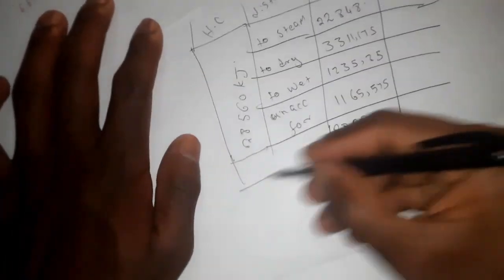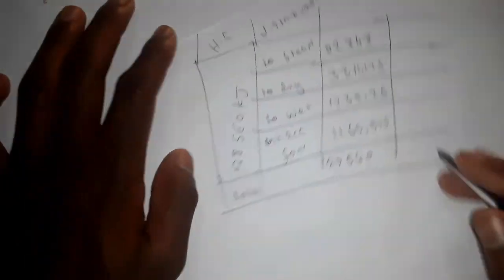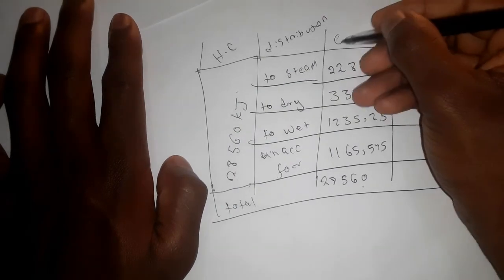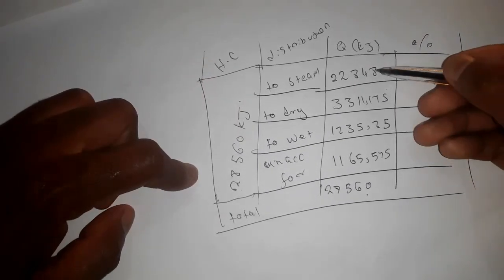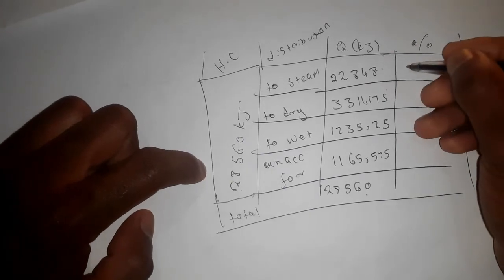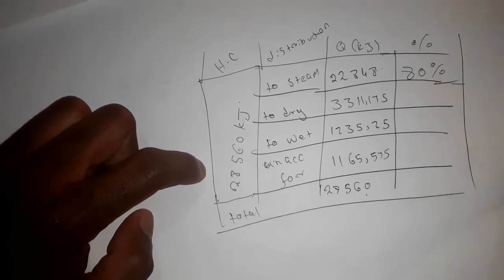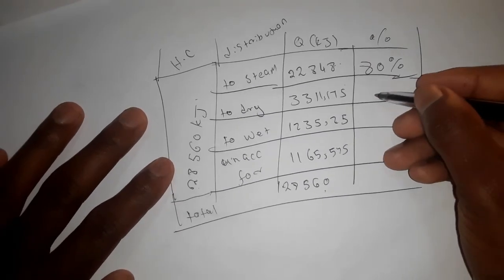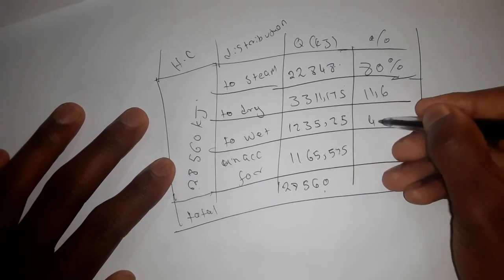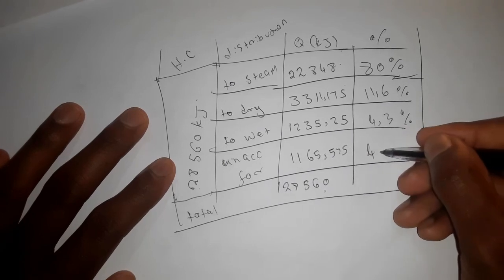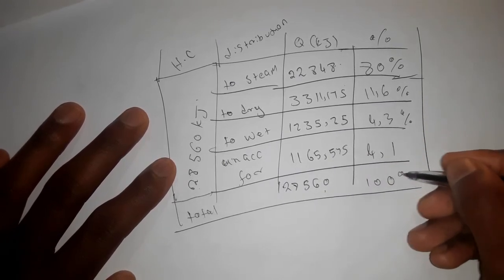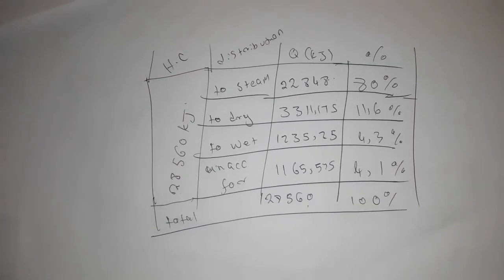Converting each value to a percentage by dividing by 28,560 times 100: heat to steam is 80%, confirming the thermal efficiency; dry gases is 11.6%; moisture is 5.3%; and heat unaccounted for is 4.1%. These sum to 100%. That is all they asked. I will see you on the next lesson. Thank you.